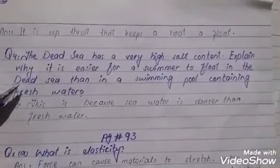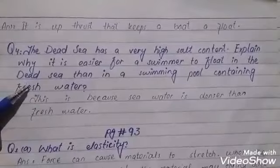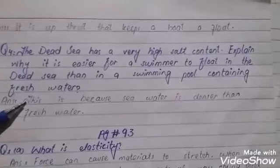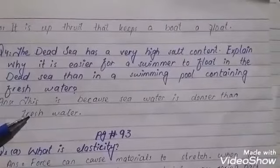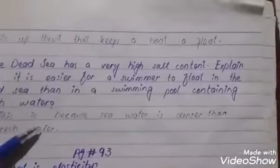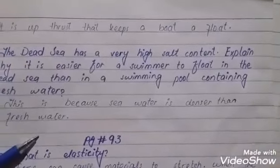Fourth question: The Dead Sea has a very high salt content. Explain why it is easier for a swimmer to float in the Dead Sea than in a swimming pool containing fresh water. This is because sea water is denser than fresh water. Thank you.